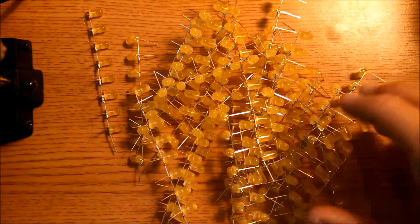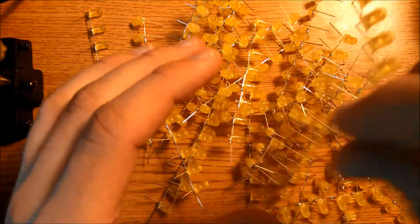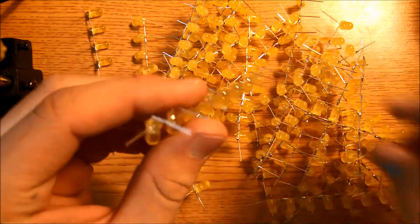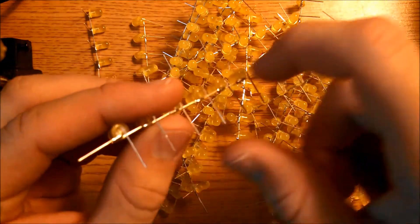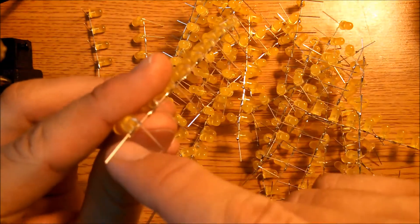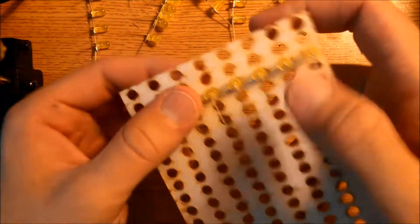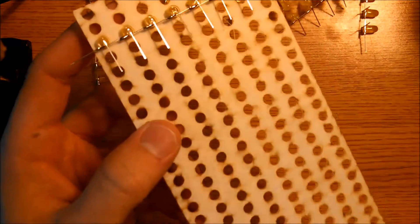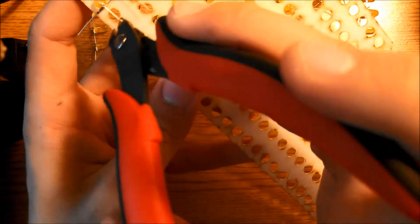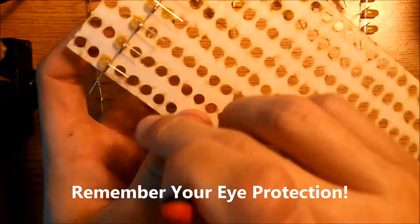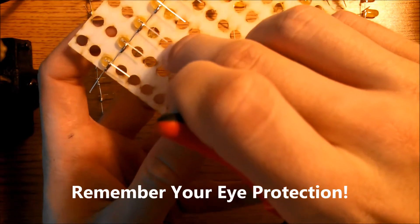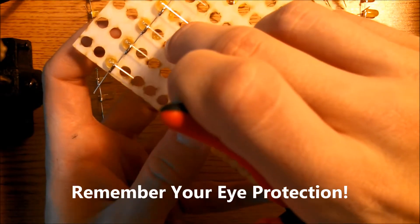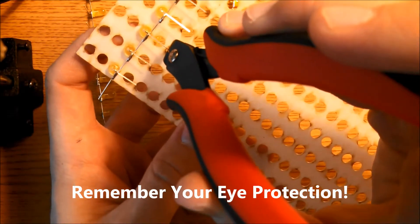Once all of these LED columns have been bent, it's time to trim all of these leads and also this lead. To trim them properly, place the column back into your template. Grab your wire cutters and cut somewhere around here. Cut where the circle meets the LED lead.